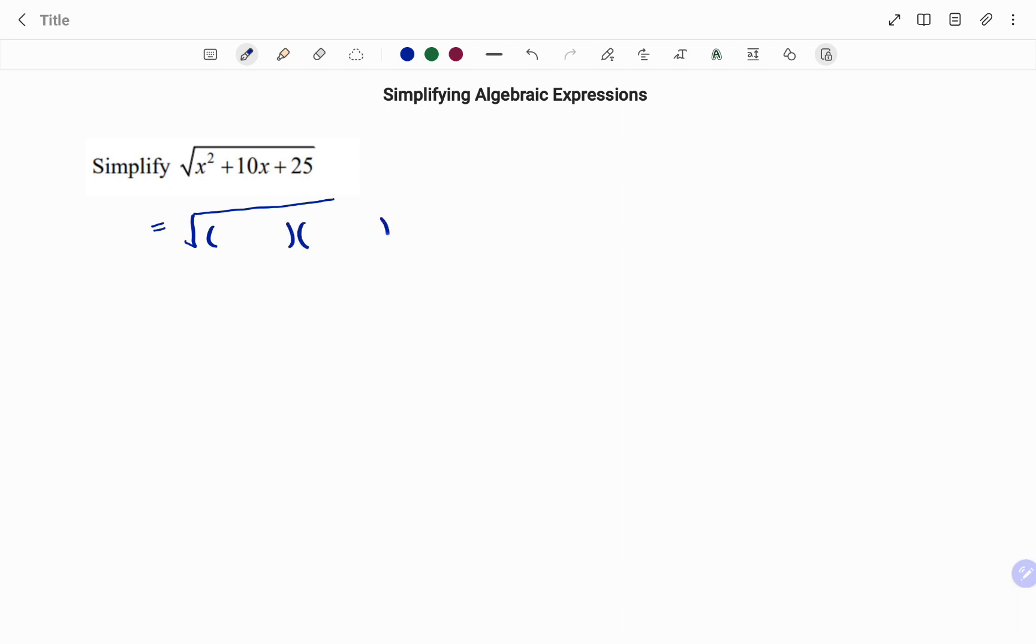If I open my two brackets, I'm looking for factors of 25 that will also give us 10x. So on the side, I have x squared plus 10x plus 25.